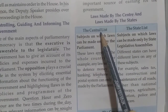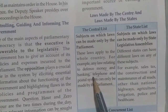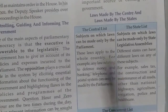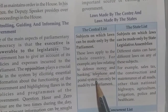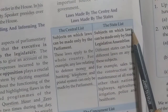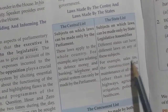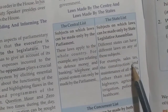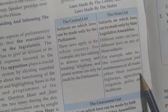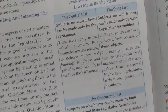The Union List includes subjects like defense, banking, telephone, and postal systems — laws on these can be made only by the central government. On the other hand, state governments can make laws and levy taxes on sales tax, construction, roads, national highways, agriculture, police, and healthcare. These are all under the state level.